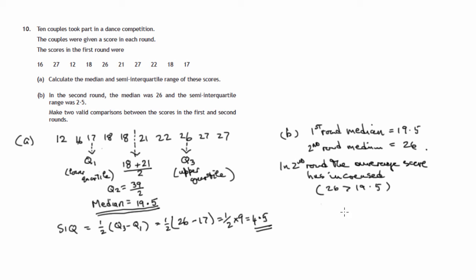The other statistic we have is the semi-interquartile range. In the first round, the semi-interquartile range we worked out was 4.5. So what's happened in the second round? What's the semi-interquartile range of the scores in the second round? We're told the semi-interquartile range has gone down to 2.5.